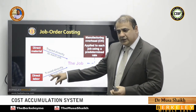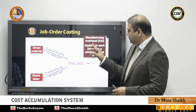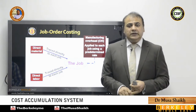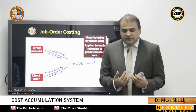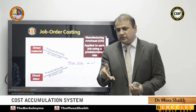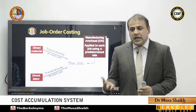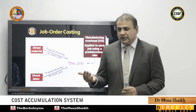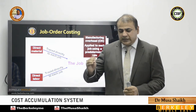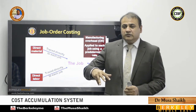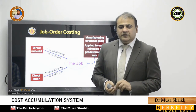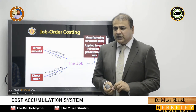Overheads in job order costing are applied to each job using a predetermined rate. Predetermined means it is calculated well before the actual expenses are incurred — we assume or estimate how much overhead will occur. For example, before a cost is actually spent, we pre-assume the maximum it can be. This is a really important concept.